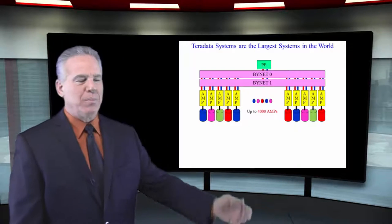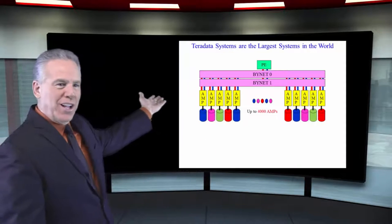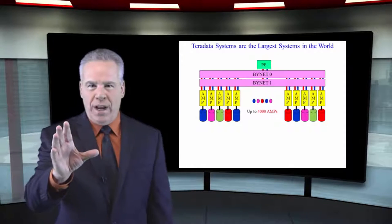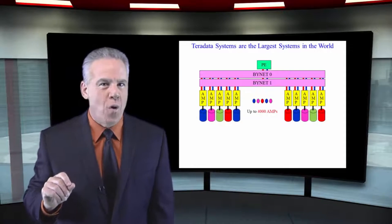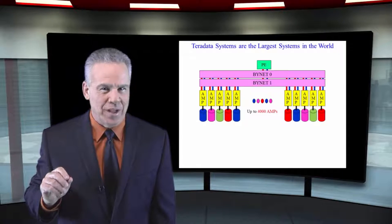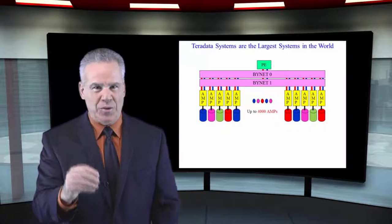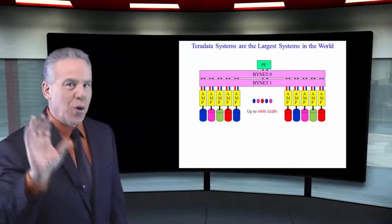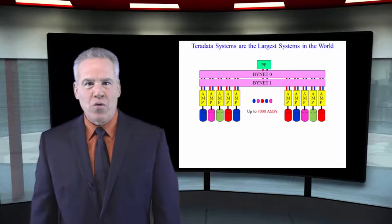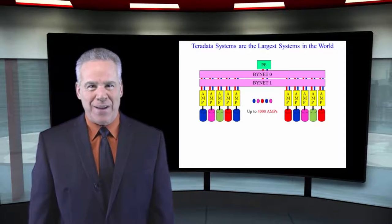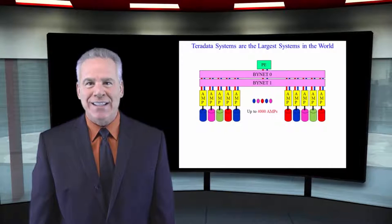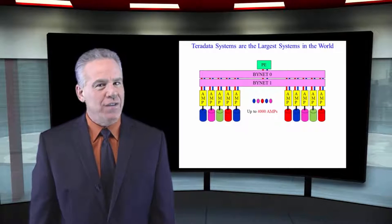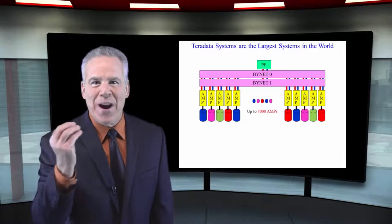This is another fantastic picture of Teradata. Parsing engine at the top, two beautiful binets and 4,000 AMPs. These are actually systems in production that have so much data, so many users that they've grown to have 4,000 AMPs. That's amazing scalability and that's a key feature in any data warehouse.